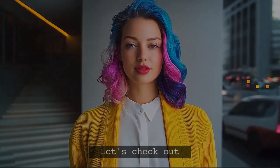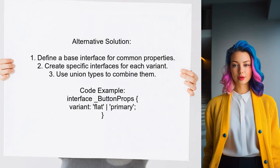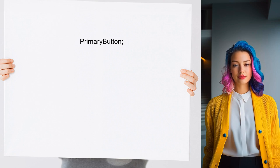Let's check out another perspective from a different user. An alternative approach involves defining separate interfaces for different button variants. They suggest creating a base interface for common properties and then extending it for specific variants, allowing TypeScript to suggest appropriate properties based on the variant selected.